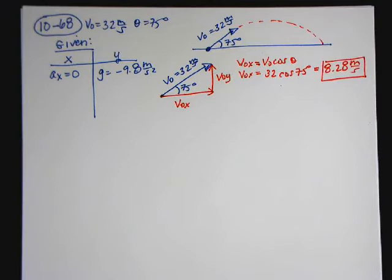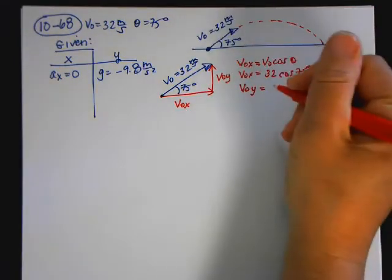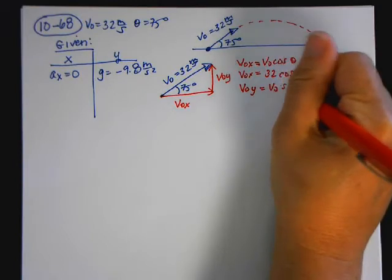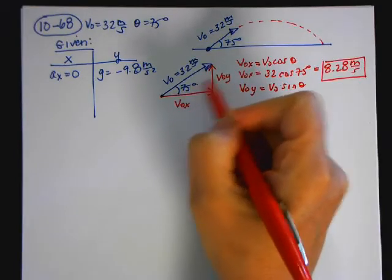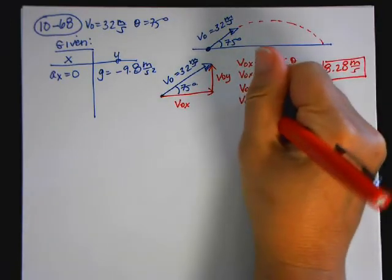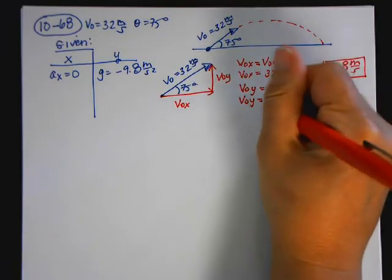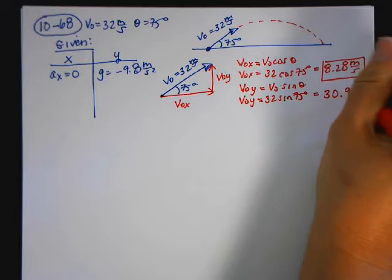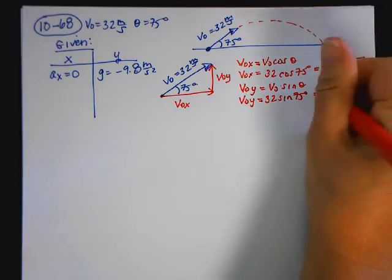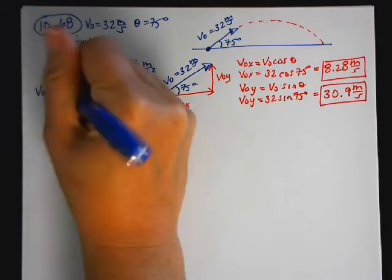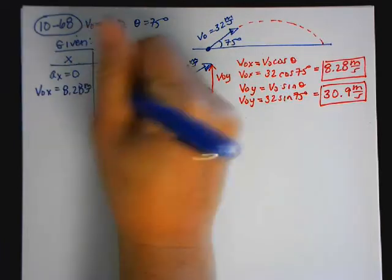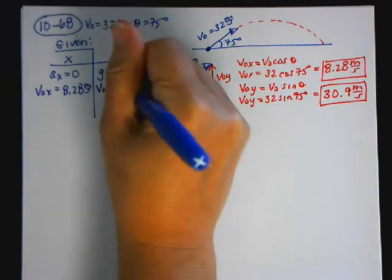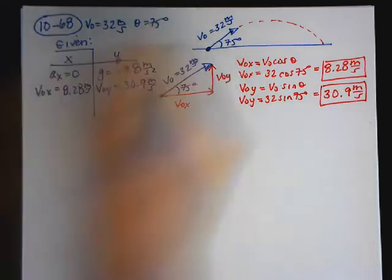Now I'm going to find the Y component. V-naught Y is equal to V-naught sine of theta — it's sine because it's opposite the given angle. So V-naught Y equals 32 sine of 75 degrees, which comes out to be 30.9 meters per second. So in my given, I write V-naught X equals 8.28 and V-naught Y equals 30.9 meters per second.